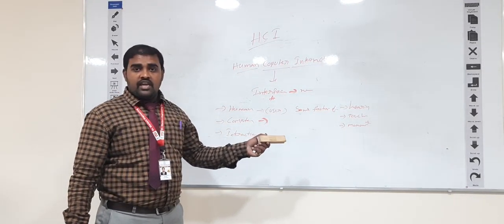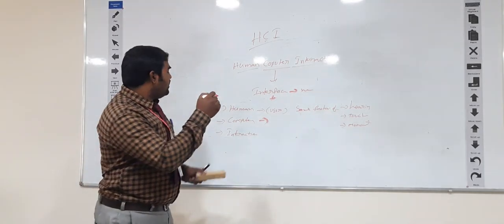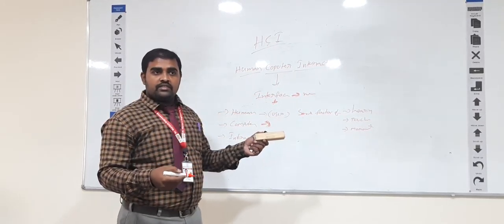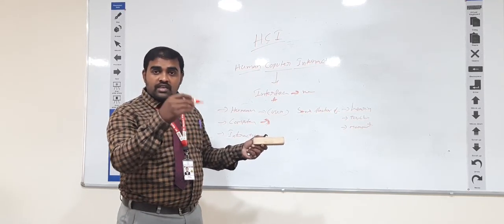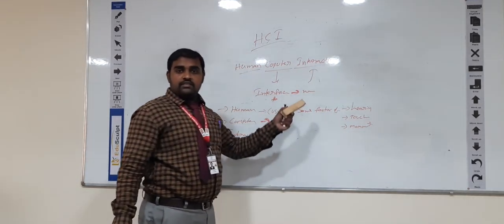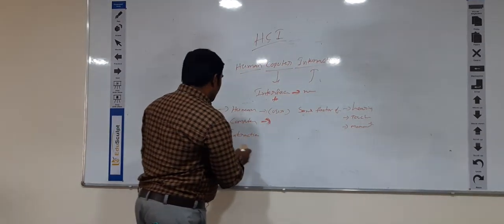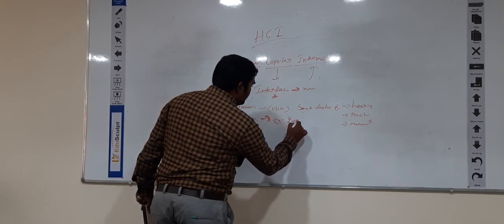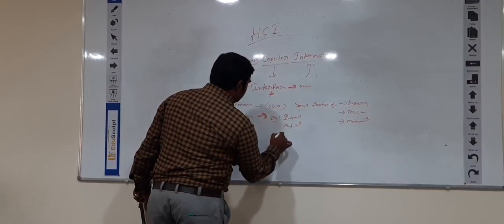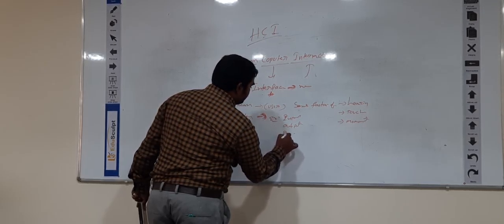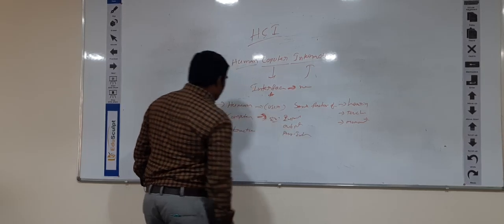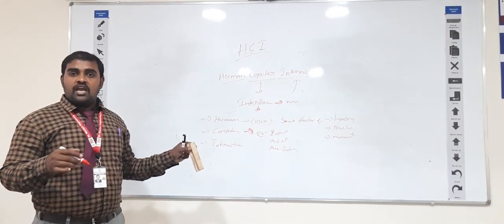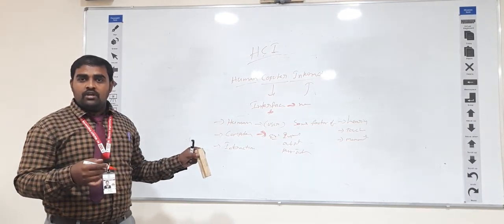Next comes the computer. The computer is an electronic device which takes input, processes it, and prints the output in a predefined manner. The elements of the computer are input arrays, output arrays, or any physical interaction such as sound. These elements interact with the interaction component.